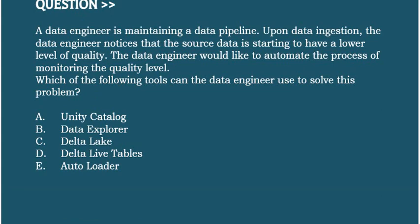Next question: A data engineer is maintaining a data pipeline. Upon data ingestion, the data engineer notices that the source data is starting to have a lower level of quality. The data engineer would like to automate the process of monitoring the quality level. Which of the following tools can the data engineer use to solve this problem? Option A: Unity Catalog. Option B: Data Explorer. Option C: Delta Lake. Option D: Delta Live Tables. Option E: Auto Loader.